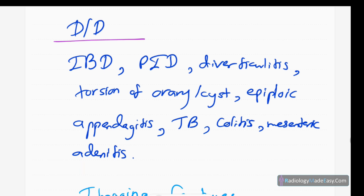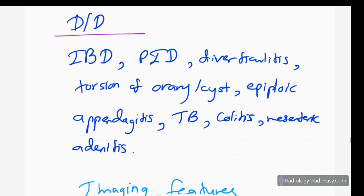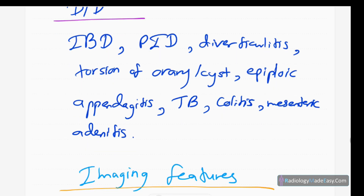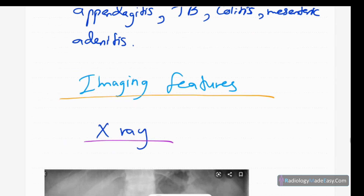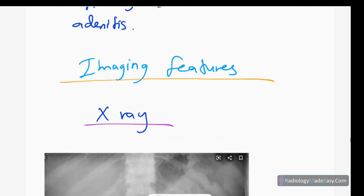Differential diagnoses for RIF pain include inflammatory bowel disease, pelvic inflammatory disease — common in females — diverticulitis, torsion of ovary and ovarian cyst, tuberculosis, sickle cell disease, colitis, and in children, mesenteric adenitis, which is another common cause for RIF pain and usually presents with diarrhea.